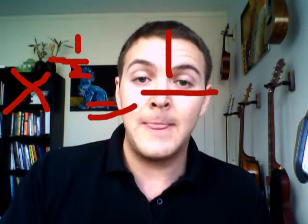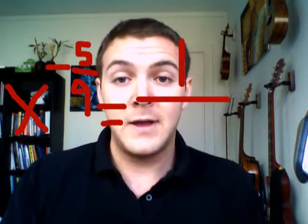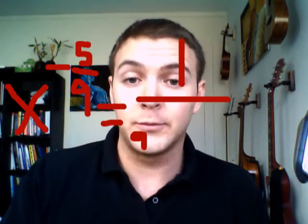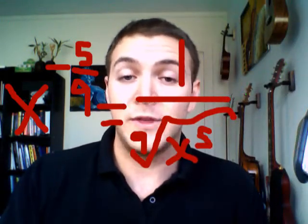Sometimes they'll get really fancy and combine rules. What is x to the negative one-half? All you're doing is combining principles — the negative flips it, so it equals one over, and then x to the half is just root x. For an unbelievably complicated one: x to the negative five-ninths is just flipped because of the negative — one over, everything becomes positive, the denominator nine gives you the ninth root, and the numerator gives you x to the fifth.